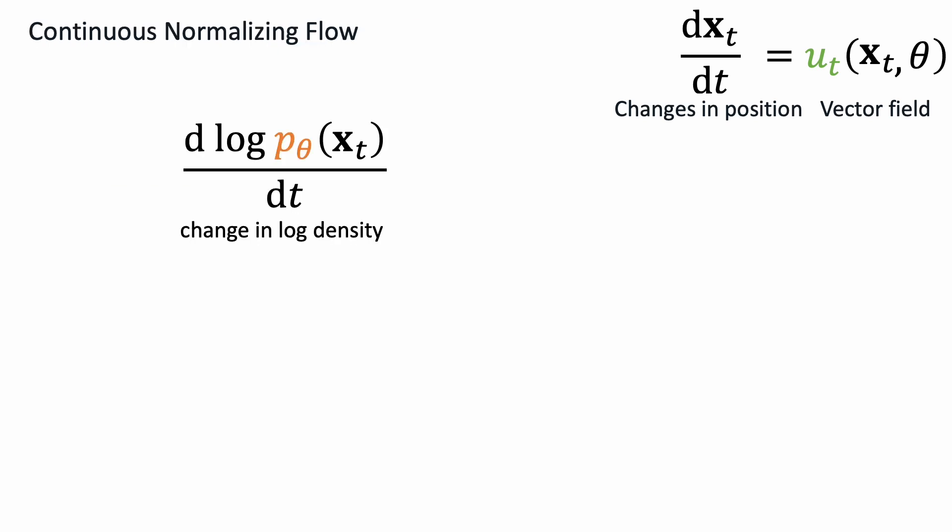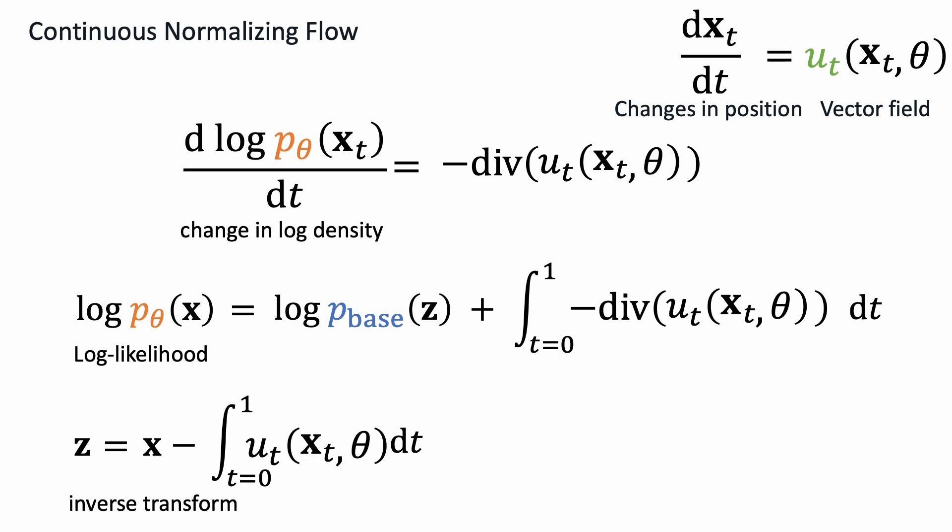The continuity equation gives us a tool for training continuous normalizing flow using maximum likelihood. Unfortunately, computing the local likelihood involves integrating vector fields over time with an ODE solver. This limits the scalability of training continuous normalizing flows on large data sets or high-resolution images. Next, we will use flow matching to enable scalable training of continuous normalizing flows.